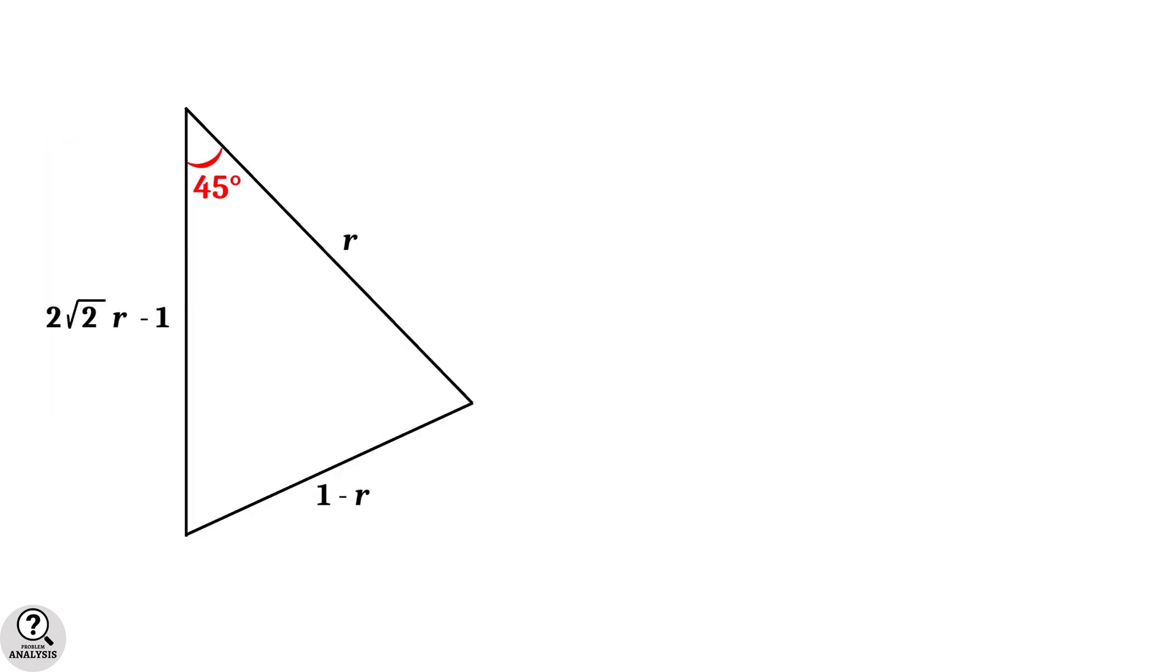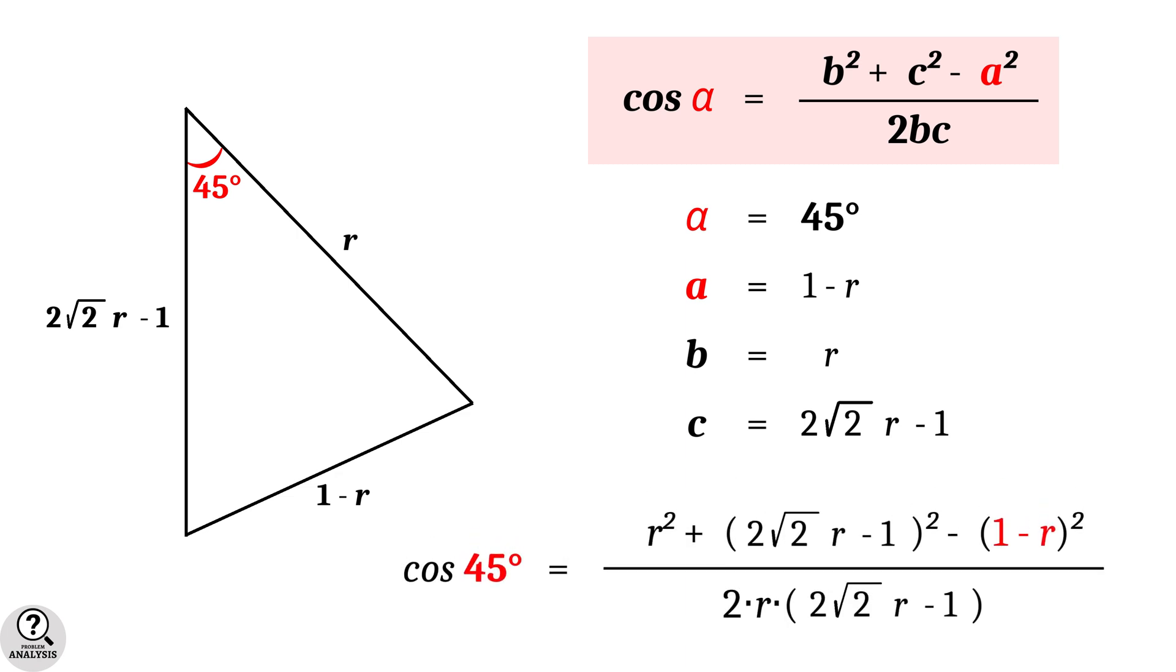Now, in the triangle of our problem, we can apply this formula, where alpha equal to 45 degrees and opposite side a equal to 1 minus r. The sides b and c can be any of the remaining sides. So in particular, I am taking b equal to r and c equal to 2 root 2 r minus 1. Then, by substitution, we get cos 45 equal to r square plus 2 root 2 r minus 1 whole square minus 1 minus r whole square whole divided by 2r into 2 root 2 r minus 1.